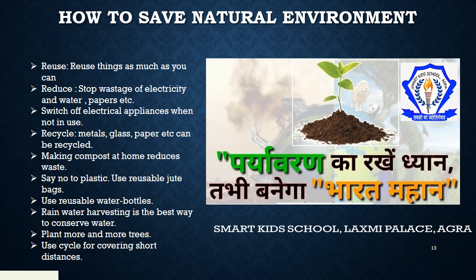पानी बचाने का सबसे अच्छा उपाय है rainwater harvesting — घर में या schools आदि में rainwater harvesting करनी चाहिए जिससे हम rain water को waste न जाने दें और underground water को recharge कर सकें। Plant more and more trees — हमें ज़्यादा से ज़्यादा पेड़ लगाने चाहिए जिससे ecosystem balance रहे। Last but not the least: use cycle for covering short distances — कम दूरी के लिए cycle का इस्तेमाल करना चाहिए जिससे petroleum products का इस्तेमाल कम हो, pollution भी कम हो, और हमारी सेहत भी बनी रहे। हम सबके सामूहिक प्रयास से ही हम अपने पर्यावरण यानि environment को बचा सकते हैं।